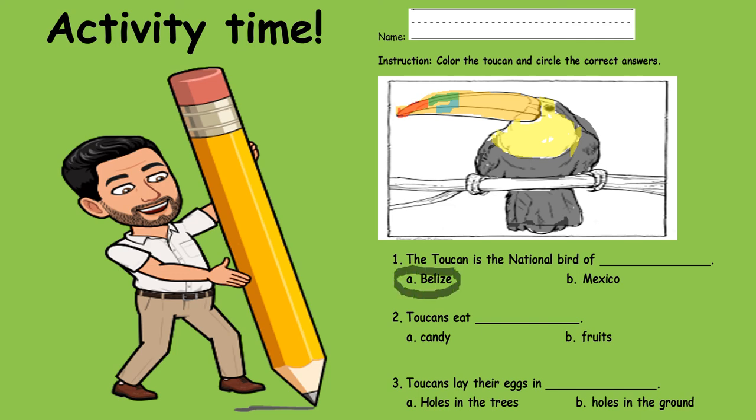If you said Belize you are correct. Number two: Toucans eat A. candy or B. fruits. Do toucans eat candy? No, that's so silly right? Toucans eat fruit. So let us circle fruits.